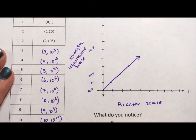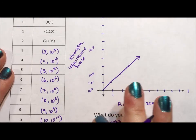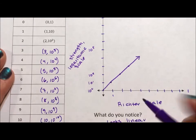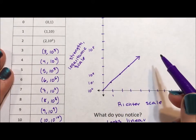What we notice is that it looks linear. And when you take a logarithmic scale and graph it on a logarithmic graph, like logarithmic paper, you're going to get something that looks linear.